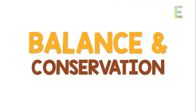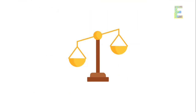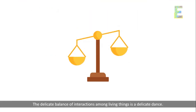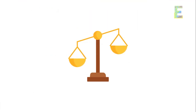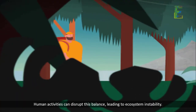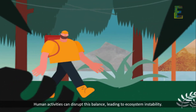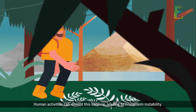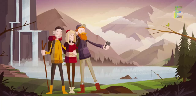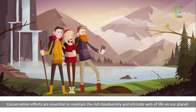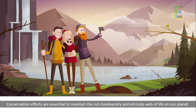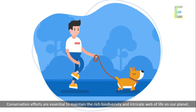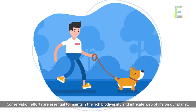Balance and conservation. The delicate balance of interactions among living things is a delicate dance. Human activities can disrupt this balance, leading to ecosystem instability. Conservation efforts are essential to maintain the rich biodiversity and intricate web of life on our planet.